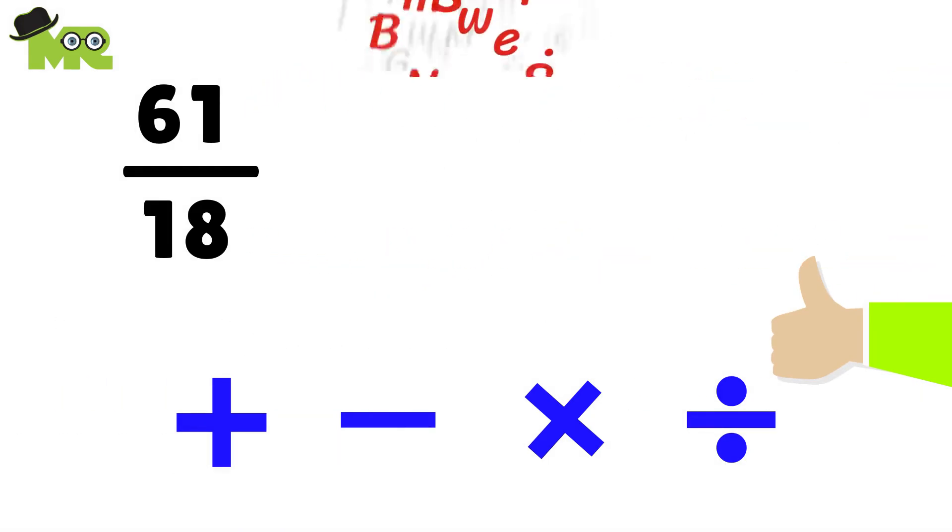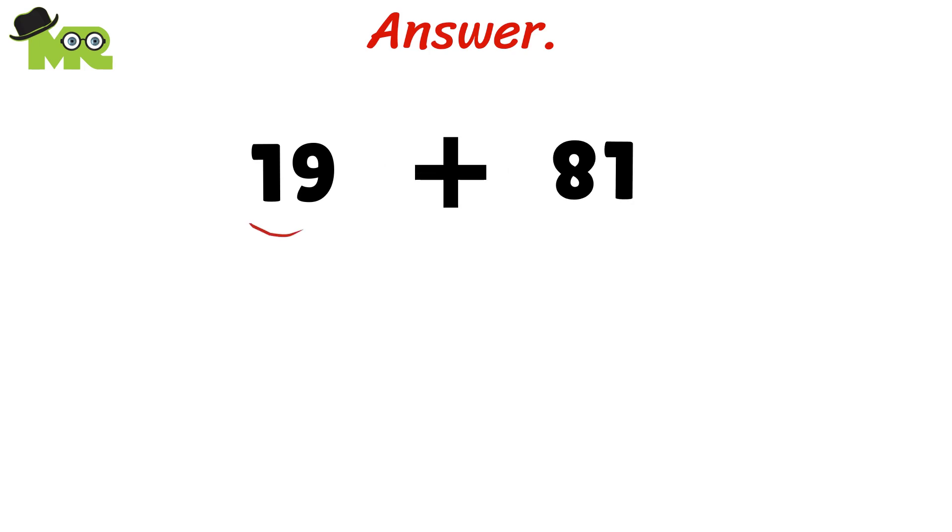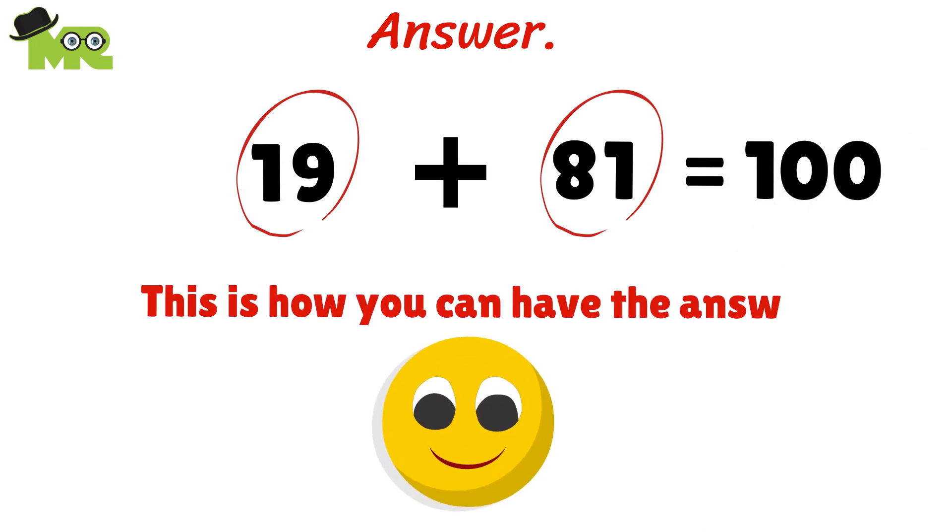If you thought outside of the box you'll realize by simply flipping 61 you will have 19. In the same way flip 18 and it will be 81. Now you can add up 19 plus 81 and the answer is equal to 100.